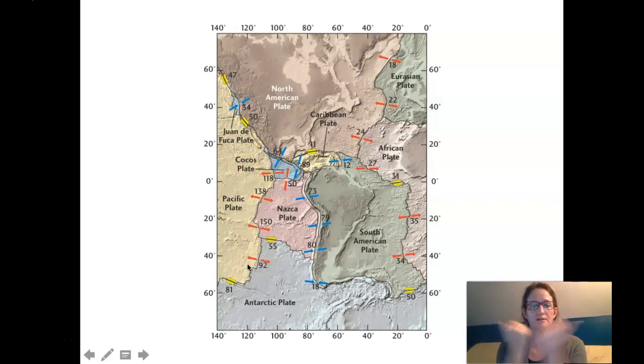Convergent plate boundaries: plates are coming together. Close to us there's a subduction zone here creating the volcanoes of the Caribbean. There's subduction here all along the Ring of Fire around the Pacific.